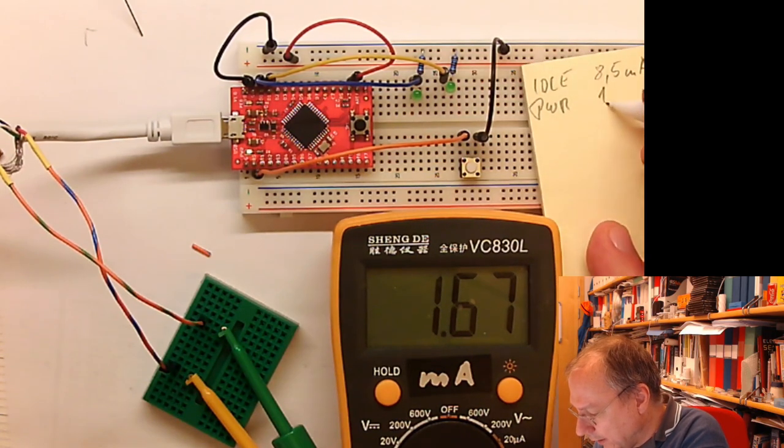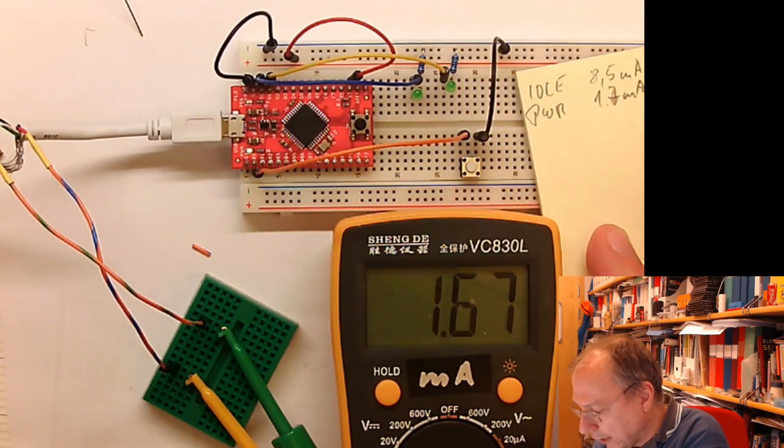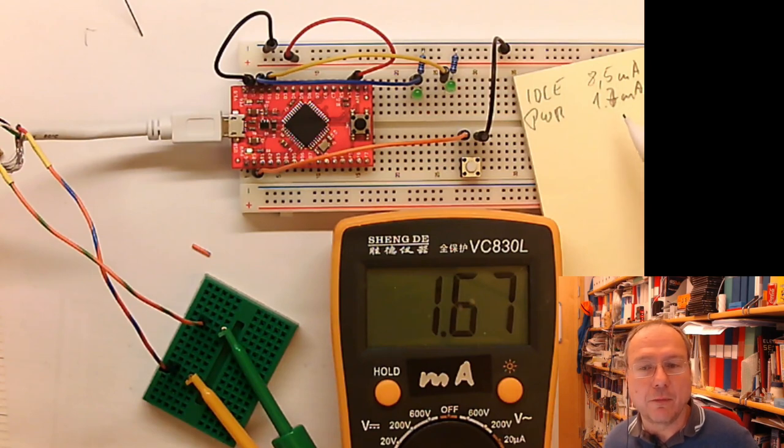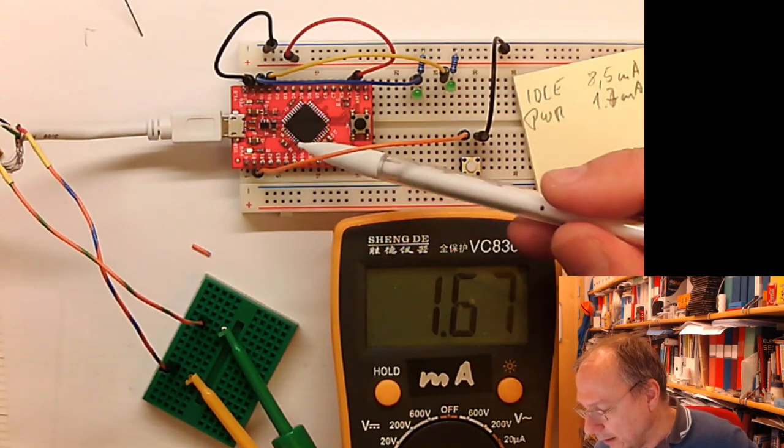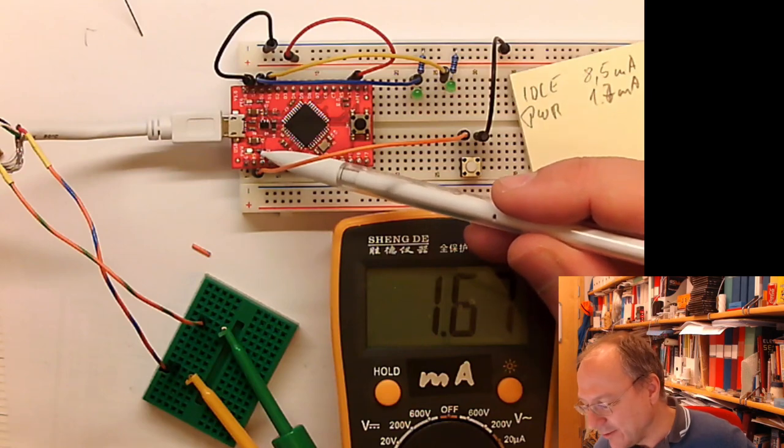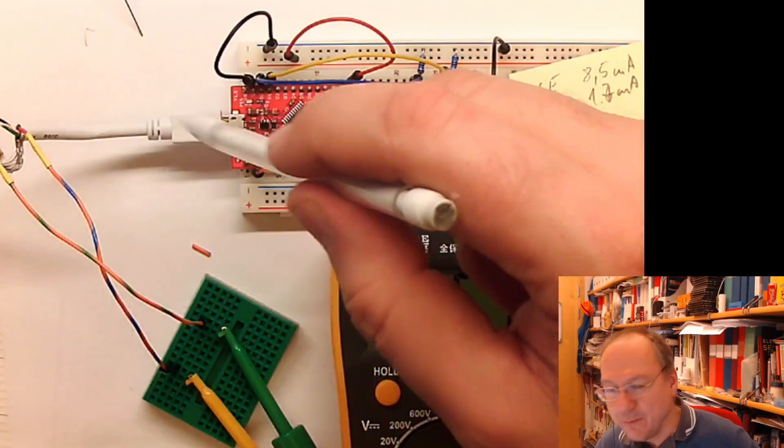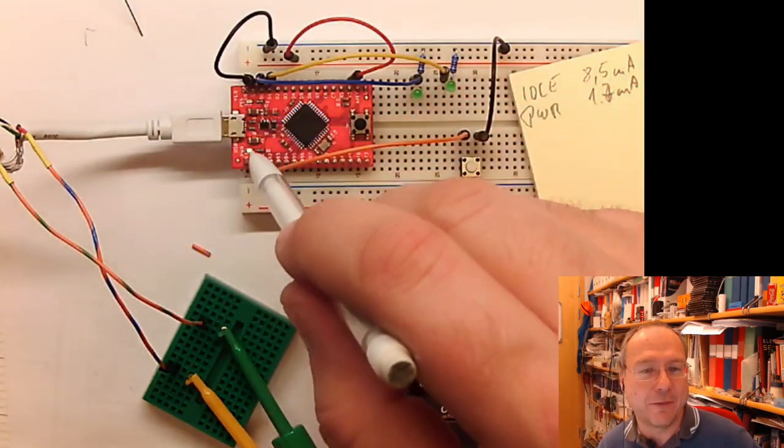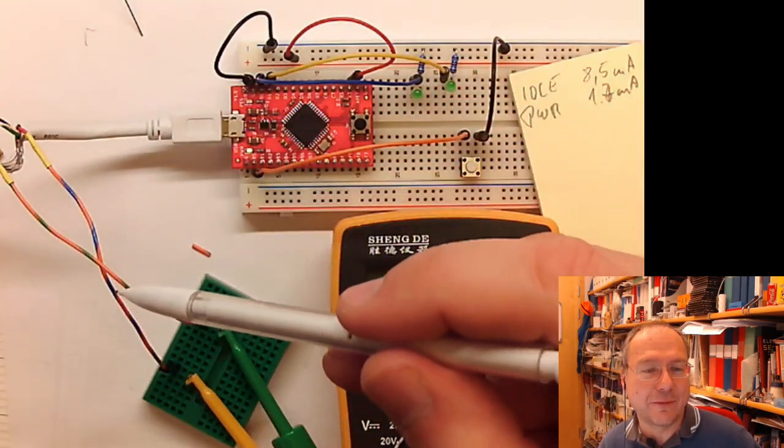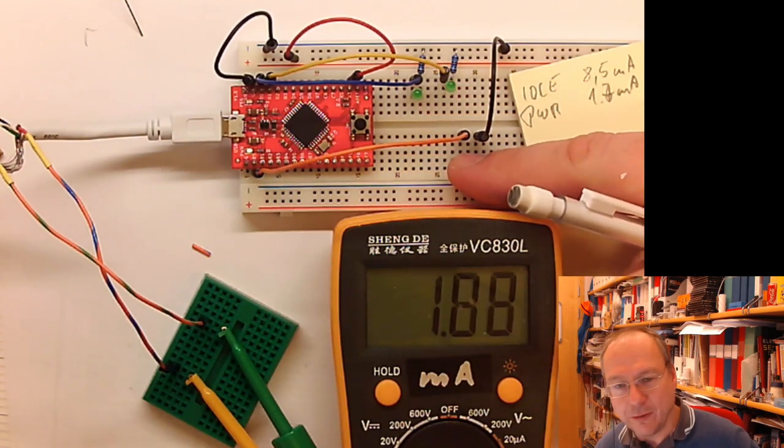Actually 1.7 milliamps, perhaps it's 1.7 milliamps. Actually about one milliamp of these 1.7 milliamps is the green LED here which is still on. And of course this LED goes through the same cable, so the power for this LED comes from here.